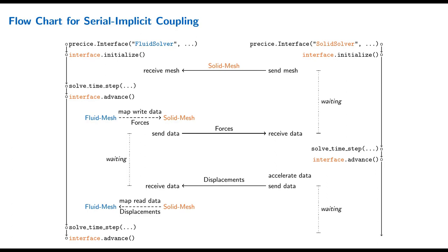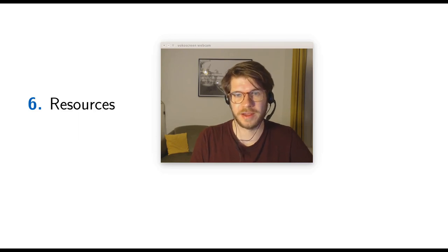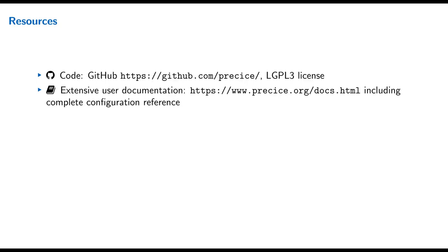We're slowly approaching the end of this video. In this last block I want to tell you about resources. Most important is the code: preCICE is on GitHub, together with binary packages for specific systems. preCICE is licensed under the LGPL3 license. The user documentation is at precice.org/docs, which includes a complete reference of all configuration options — also try the search there, it is very powerful.